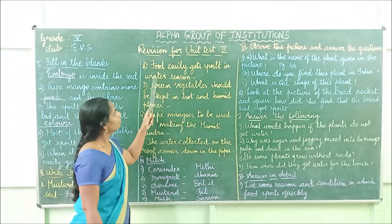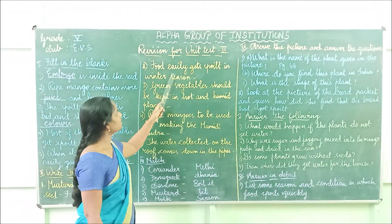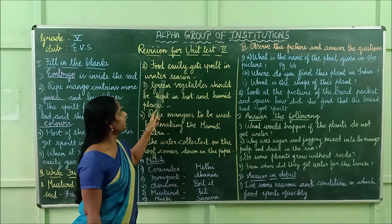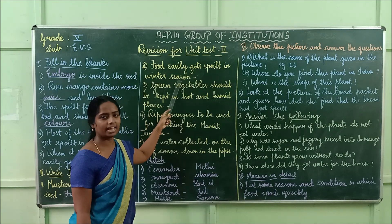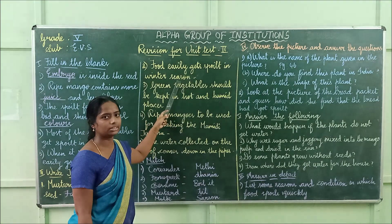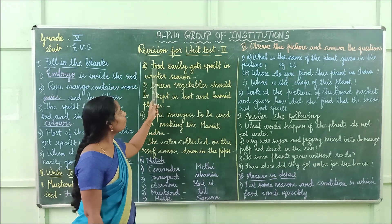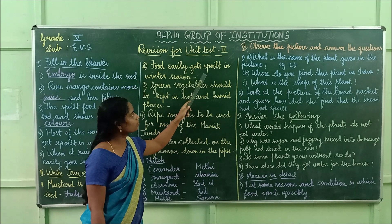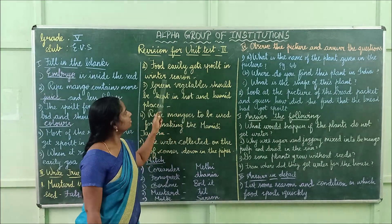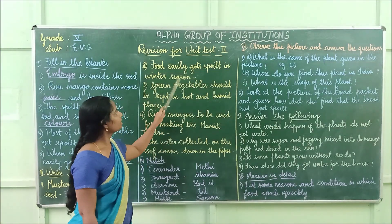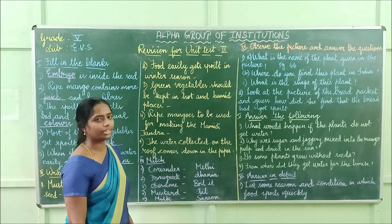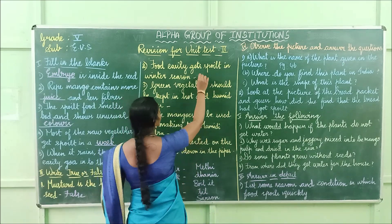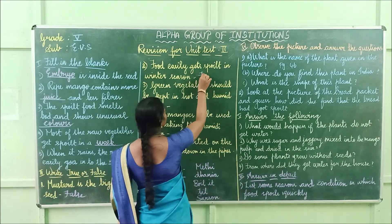Second one: food easily gets spoiled in winter season. The answer is false — it is corn. So you have to write false.